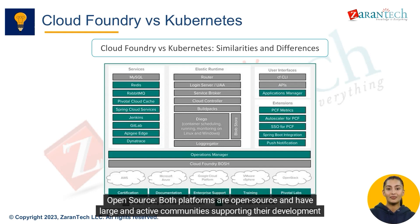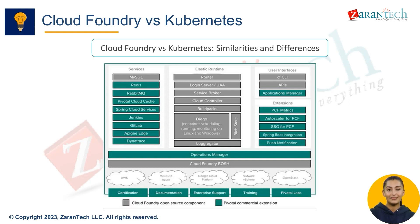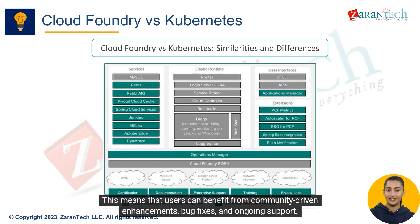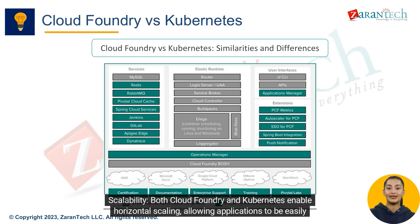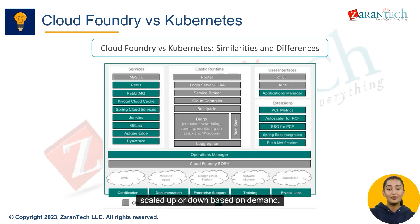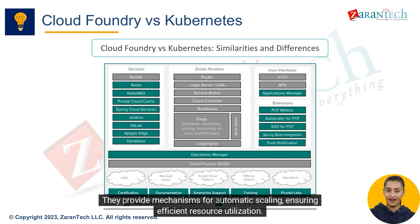Both platforms are open source and have large, active communities supporting their development and improvement, meaning users benefit from community-driven enhancements, bug fixes, and ongoing support. Both Cloud Foundry and Kubernetes also enable horizontal scaling, allowing applications to be easily scaled up or down based on demand, with mechanisms for automatic scaling ensuring efficient resource utilization.